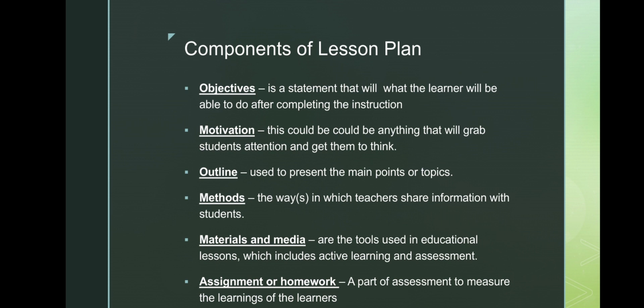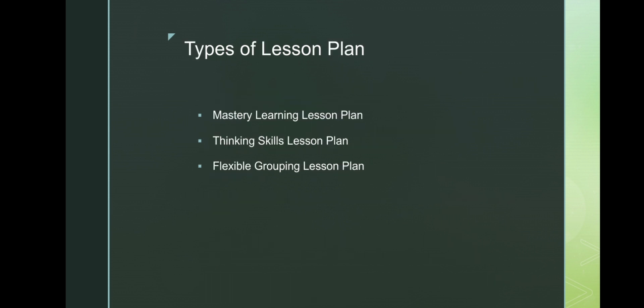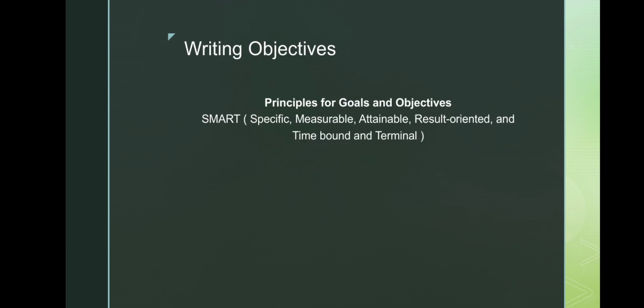Next is the outline, which is used to present the main points or topics; methods — the ways in which teachers share information with students; materials and media; and assignment or homework. There are three types of lesson plans: the mastery learning lesson plan, the thinking skills lesson plan, and the flexible grouping lesson plan. When writing objectives, the principle is that goals and objectives should be SMART: specific, measurable, attainable, result-oriented, time-bound, and terminal.